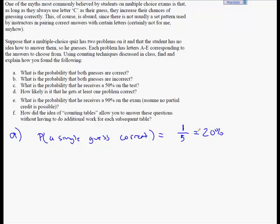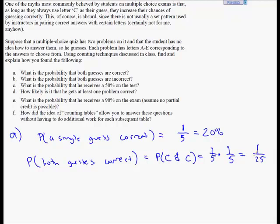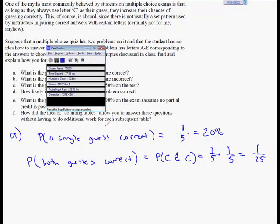The probability for both guesses correct, which we can denote for shorthand as correct and correct, well, we're assuming guesses are independent. So there's a one-fifth probability on the first one, and there's a one-fifth probability on the second one. So there's a one out of 25 chances that the person will get both guesses correct.